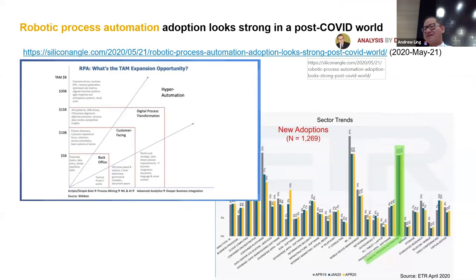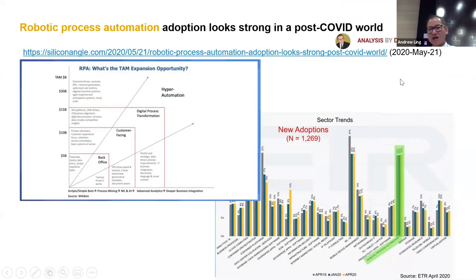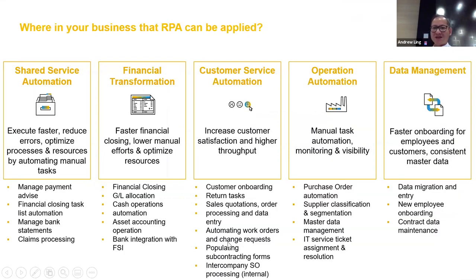From the bar chart, you can see the adoption of RPA is really strong — at the same pace as AI and ML. The green bar highlights RPA adoption, and this bar shows the adoption of AI and ML. So you must know what RPA is — it's quite trendy and quite impactful.